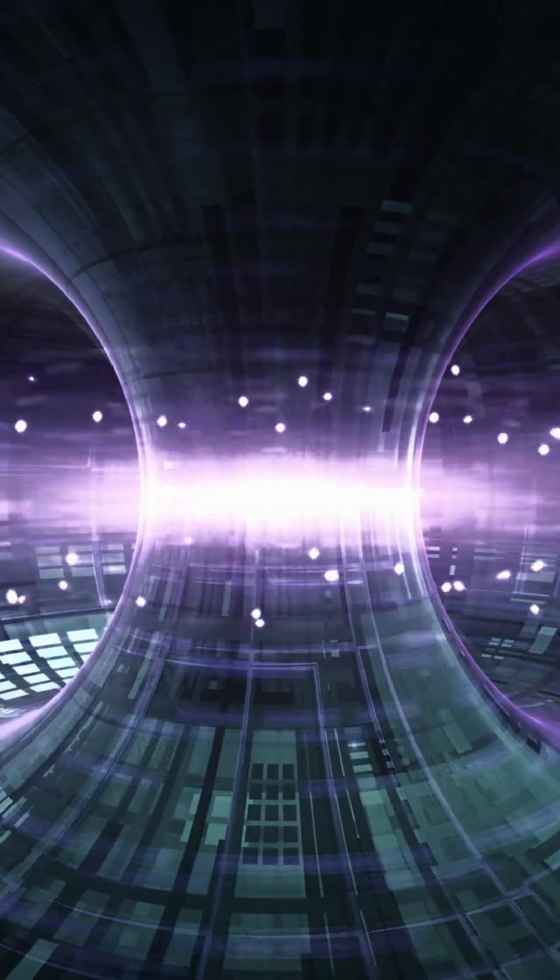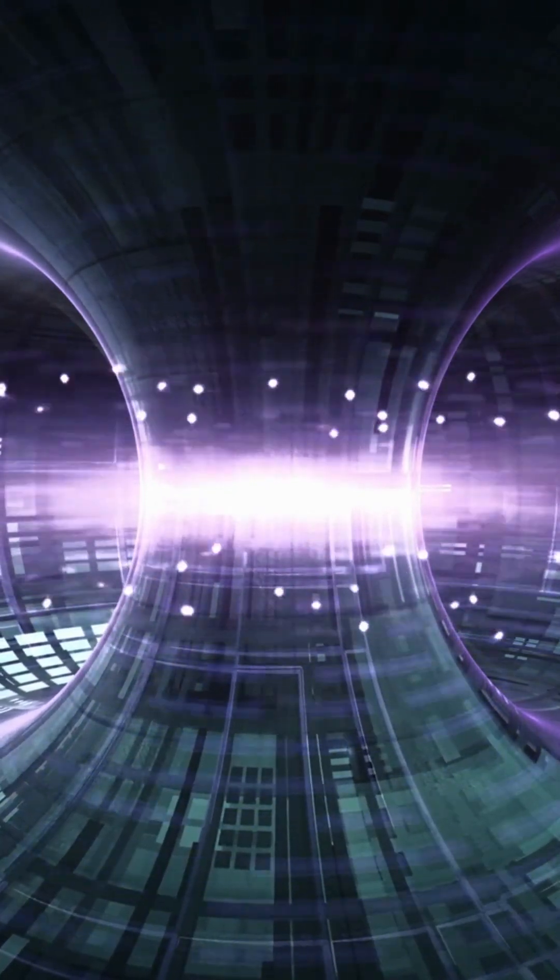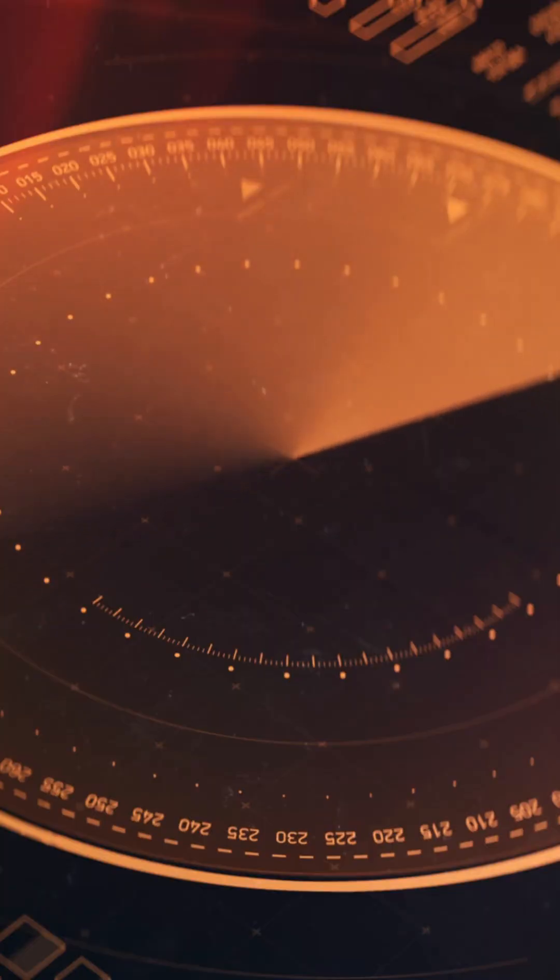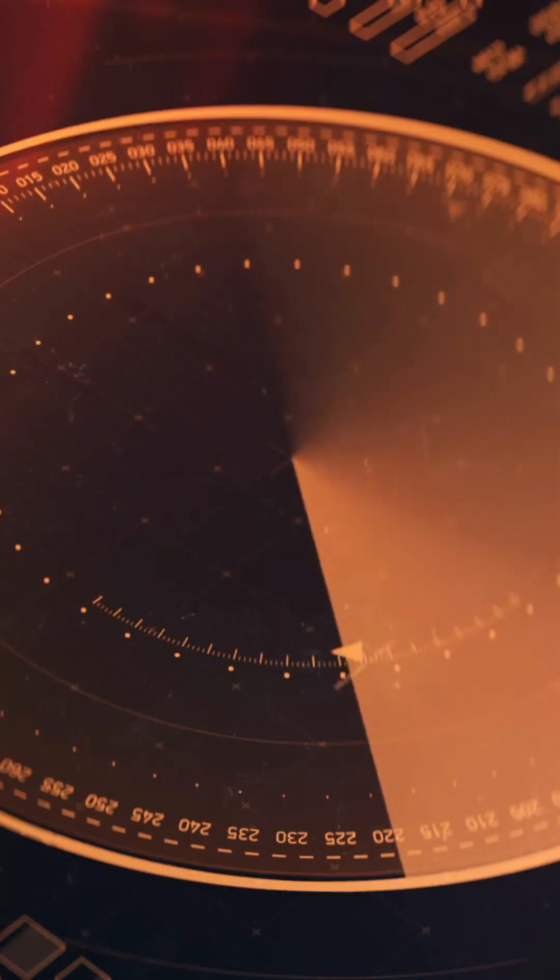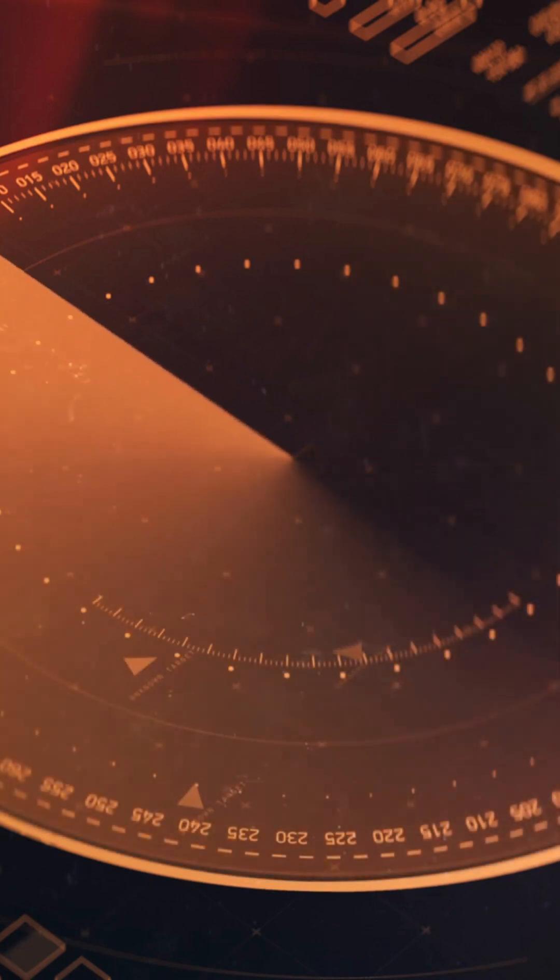When a gravitational wave passes through Earth, it stretches and compresses space-time, causing the length of the tubes to change slightly. These tiny length changes are detected as interference patterns in the laser beams, revealing the presence of a gravitational wave.